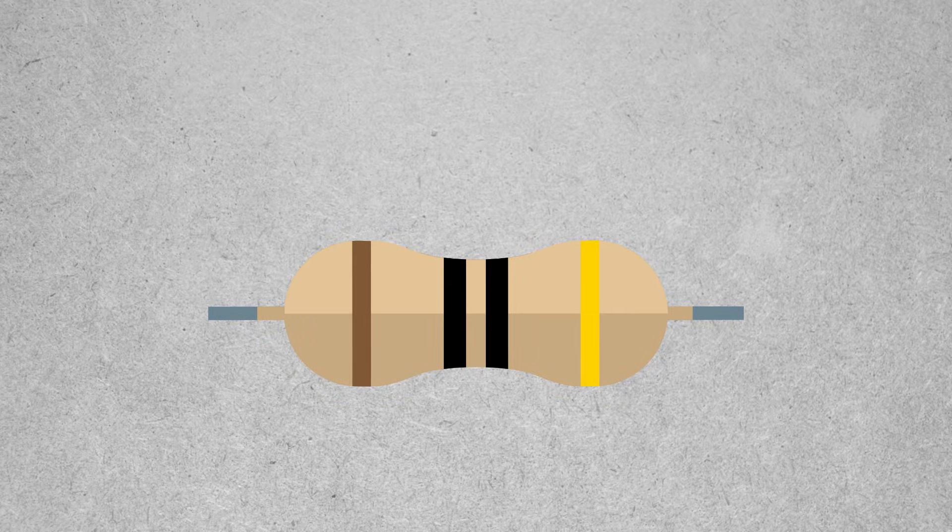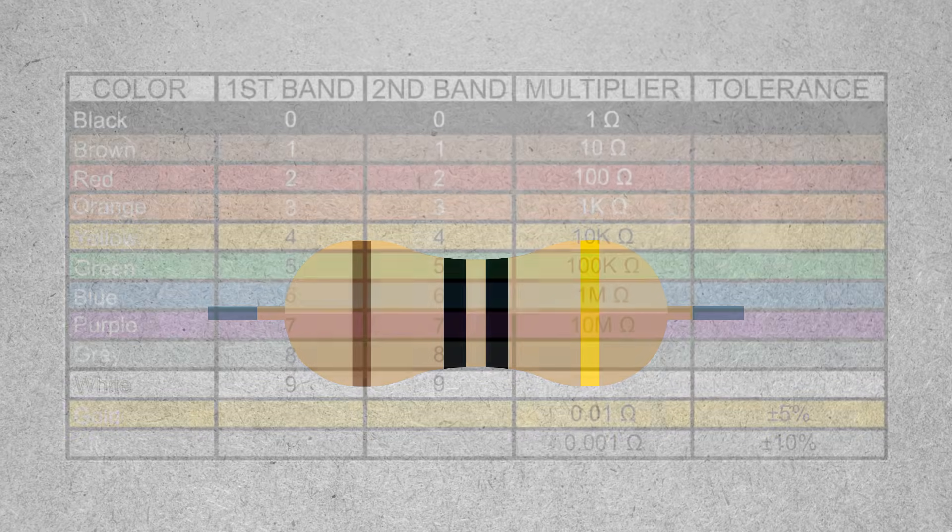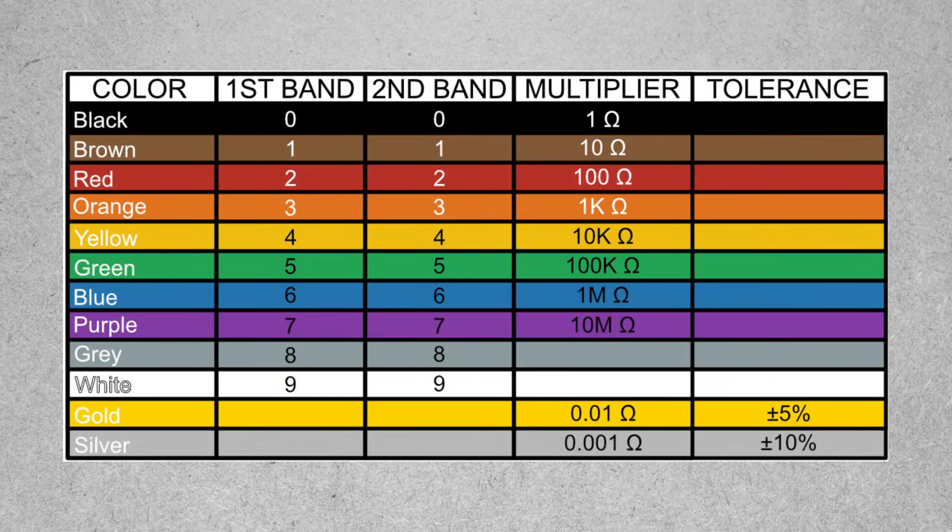Resistors allow a circuit designer to control the voltage and or amperage at a particular point in a circuit. They also come with their own language, so let's learn how to read it.